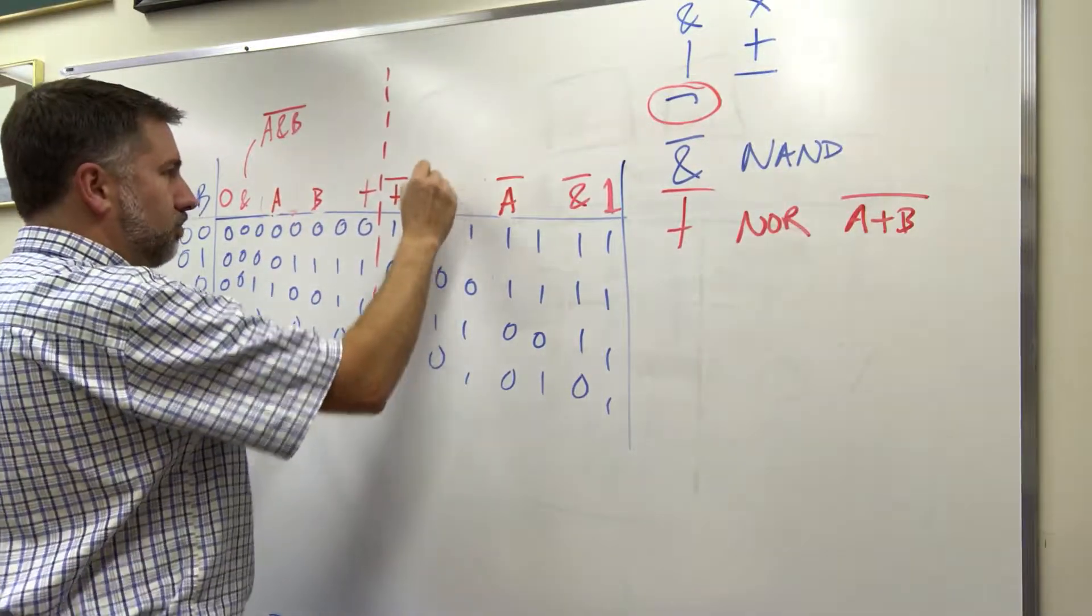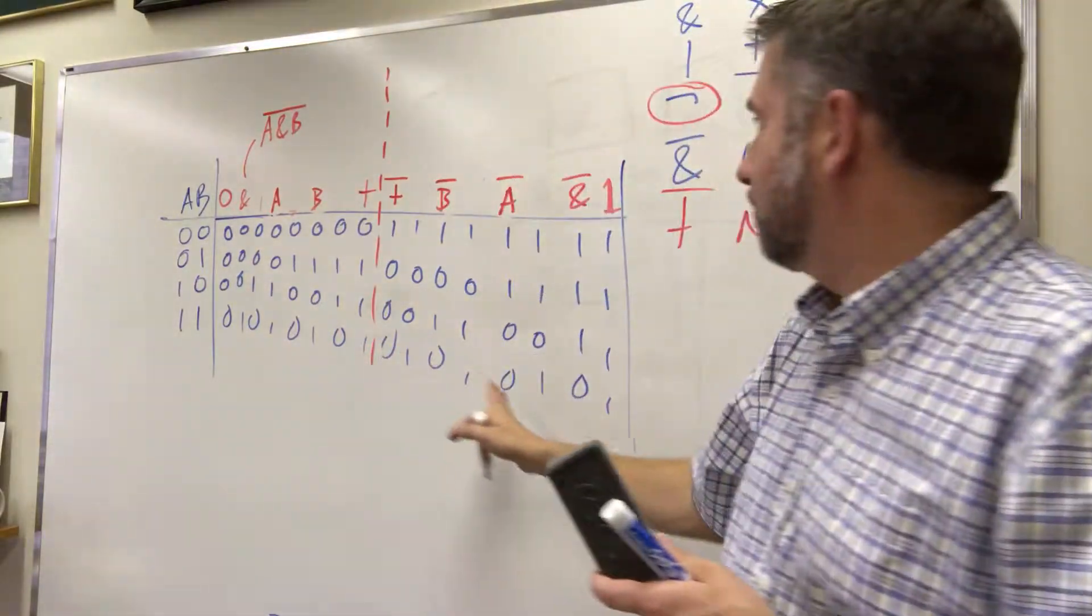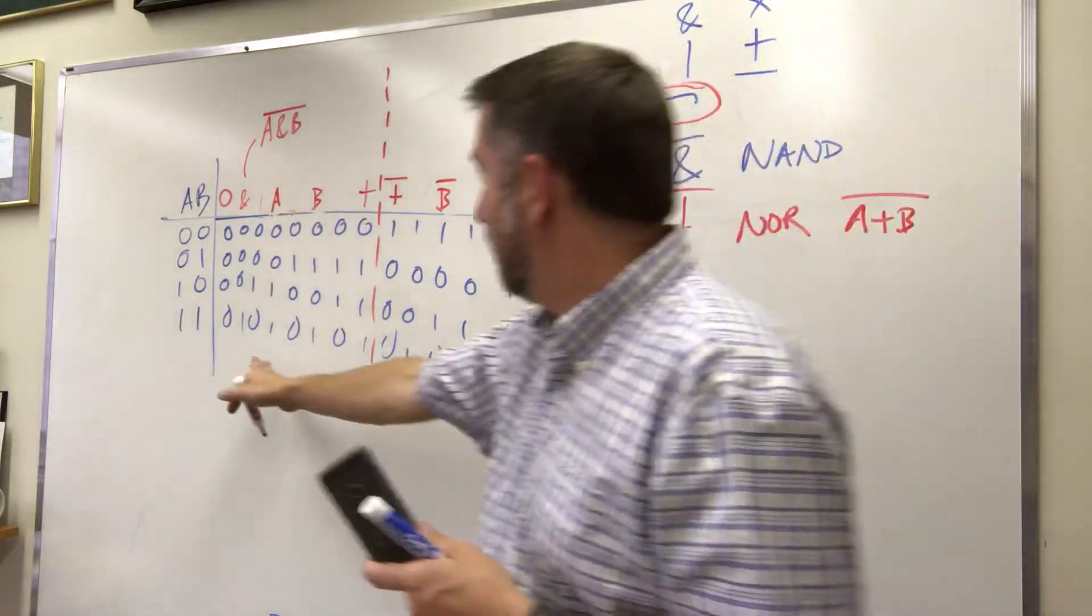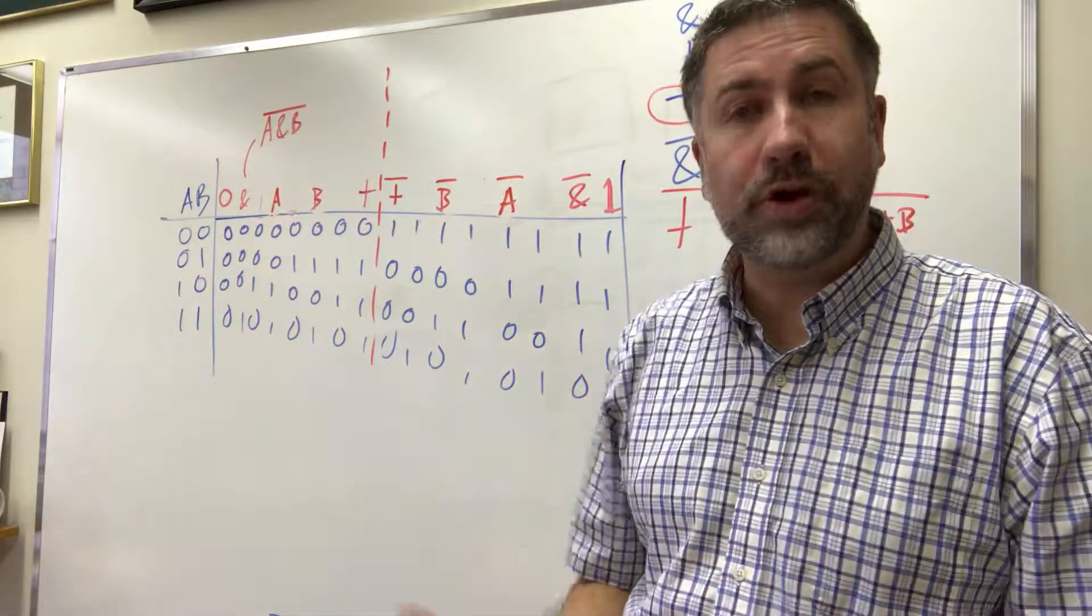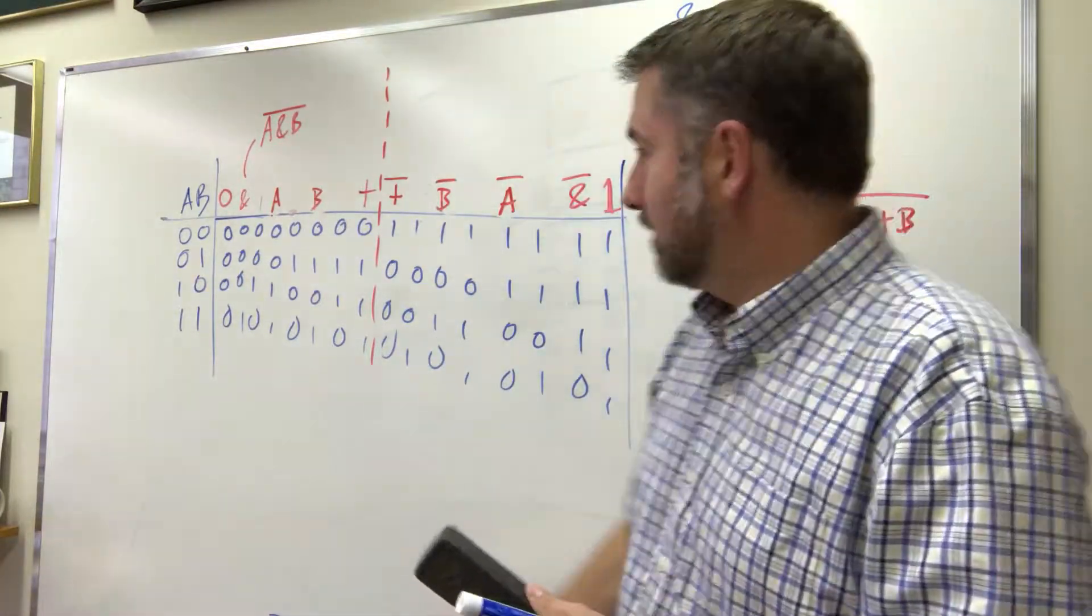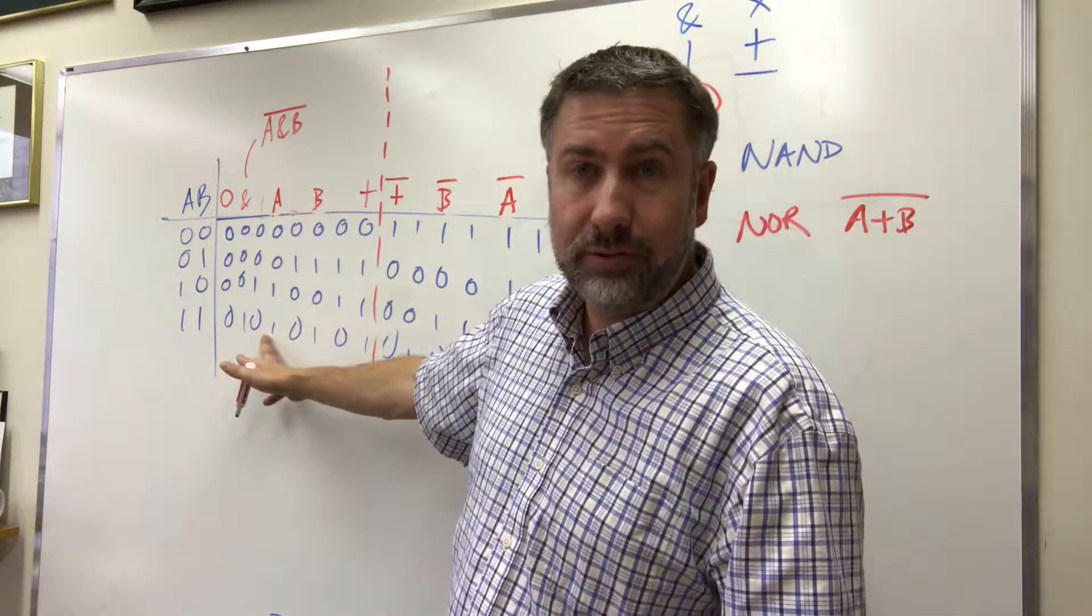And here is b prime. And so these two functions a, a prime, b, b prime, and a prime - they throw away information about one of the variables. So this is a function of two variables where the result is just the value of one of the variables.